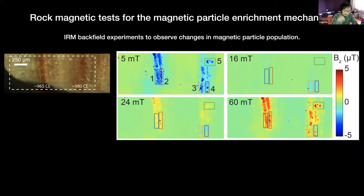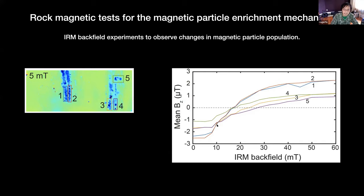Moving to the last part: the actual rock magnetism. Because we can image the same thing over and over again, we can do treatments like an IRM backfield experiment and extract an IRM backfield curve in different parts of the image. We first impart a strong IRM into the plane to get a saturated signal, then pulse it with magnetic fields out of the plane until saturated in the positive direction. We can isolate regions and plot the backfield curve for each region, and there are real differences in the magnetic particle assemblage in these small regions.